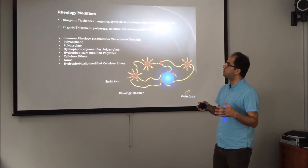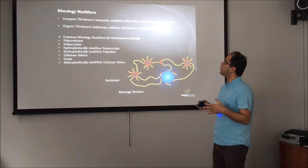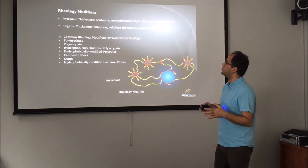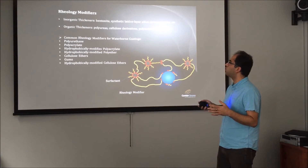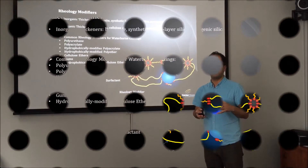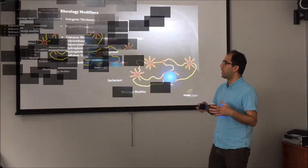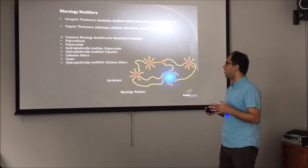There are different types of rheology modifiers — inorganic and organic. In inorganic thickeners, bentonite and silica are used. In organic thickeners, polyureas, cellulosics, and polyamides are widely used. For waterborne coatings and especially seed coating applications, gums, cellulosic ethers, and polyacrylates are mainly used as rheology modifiers.